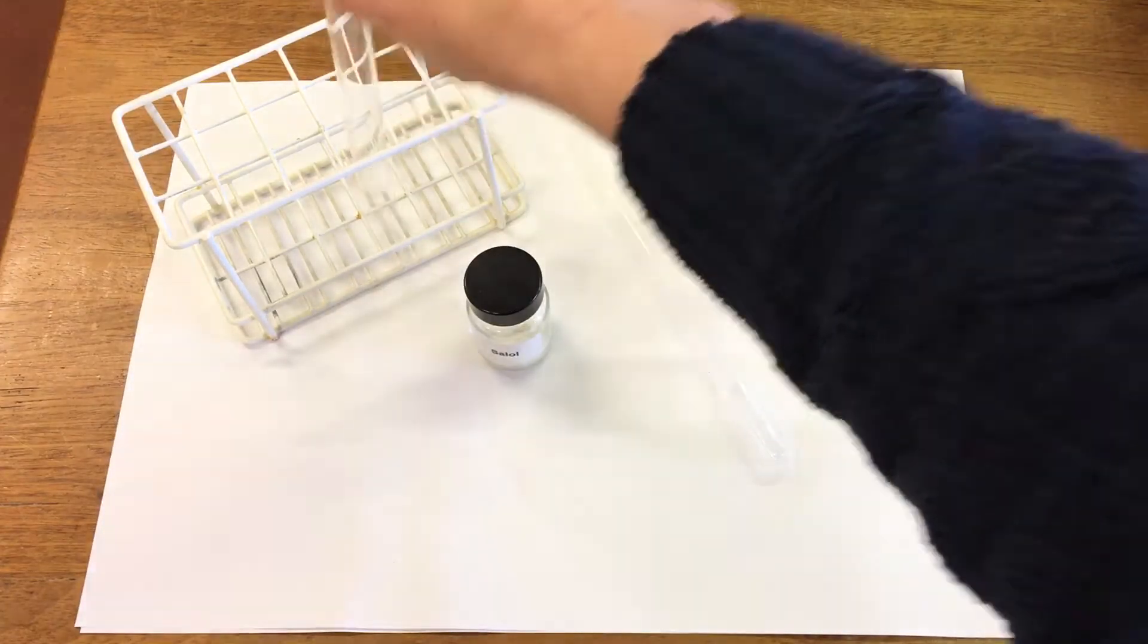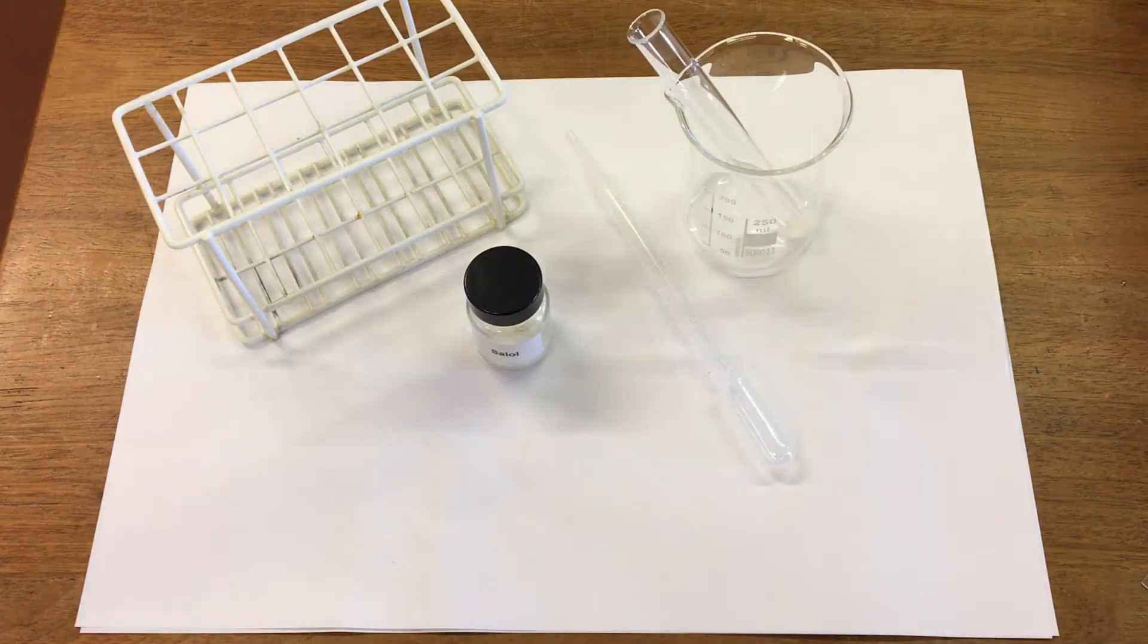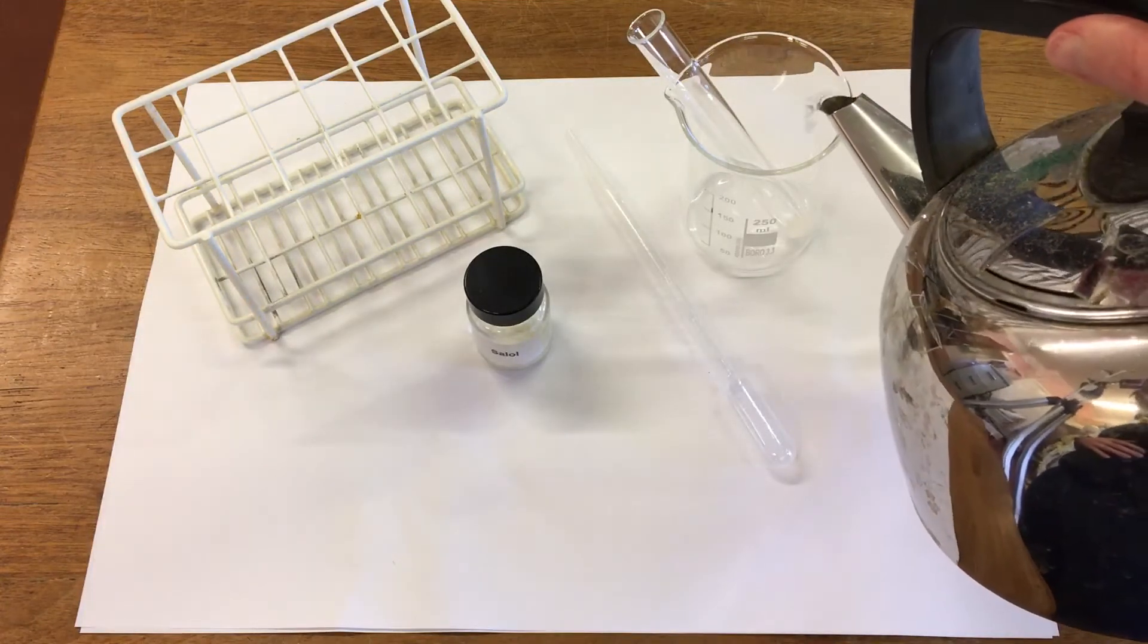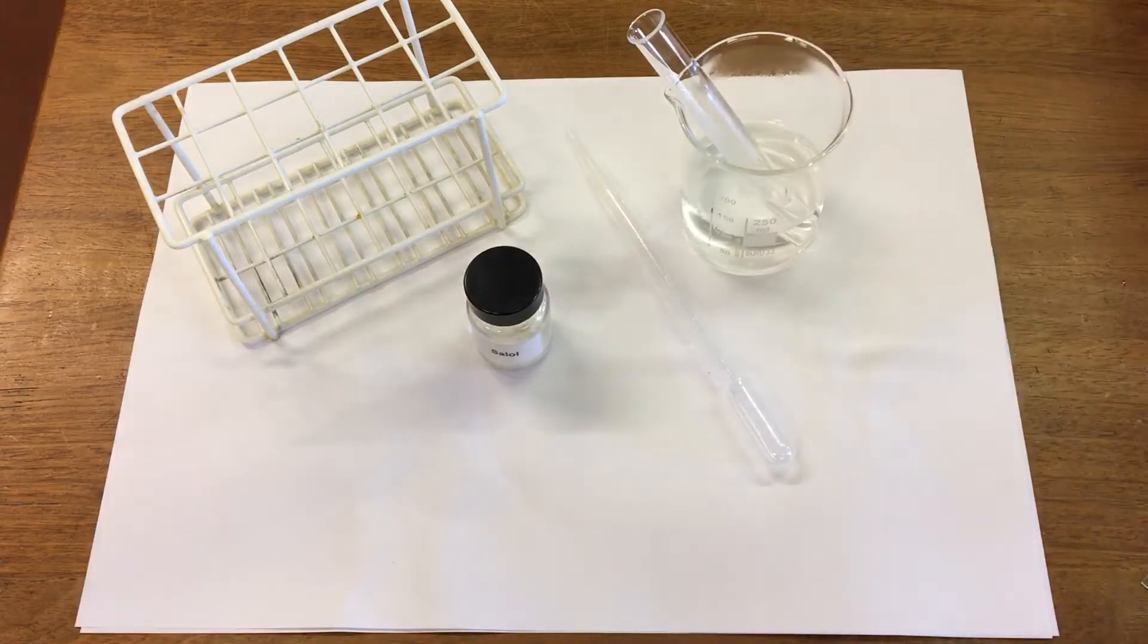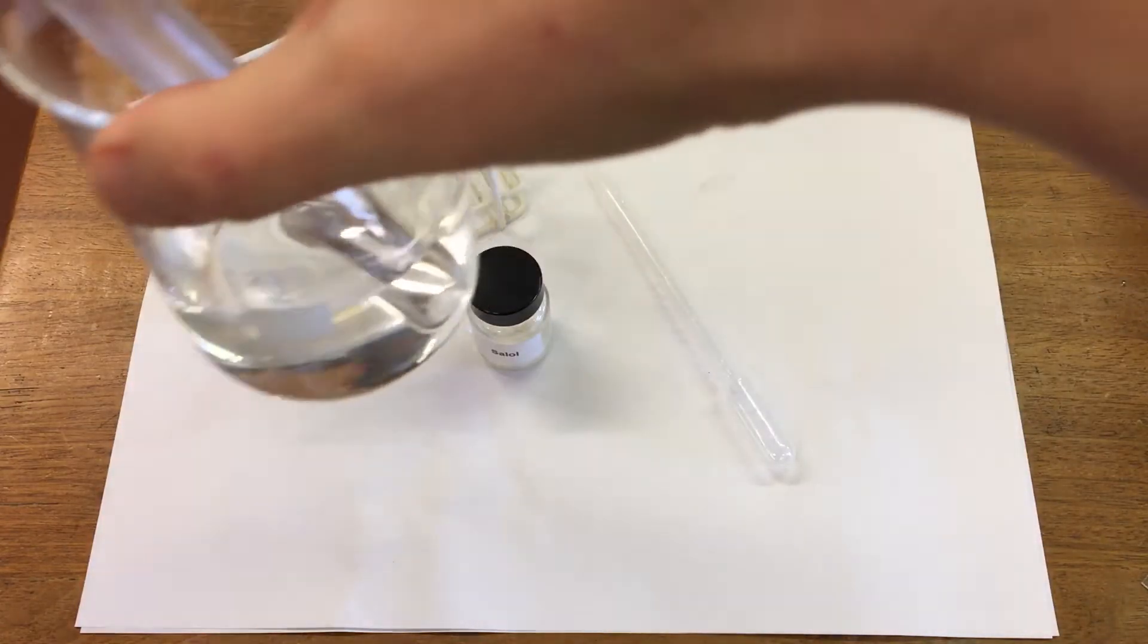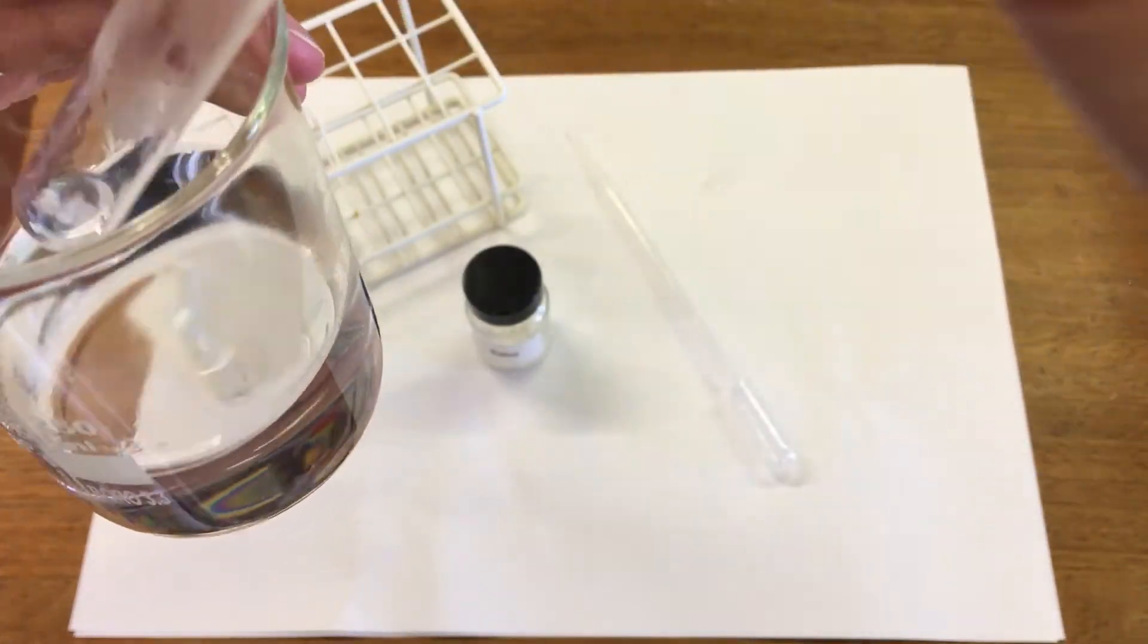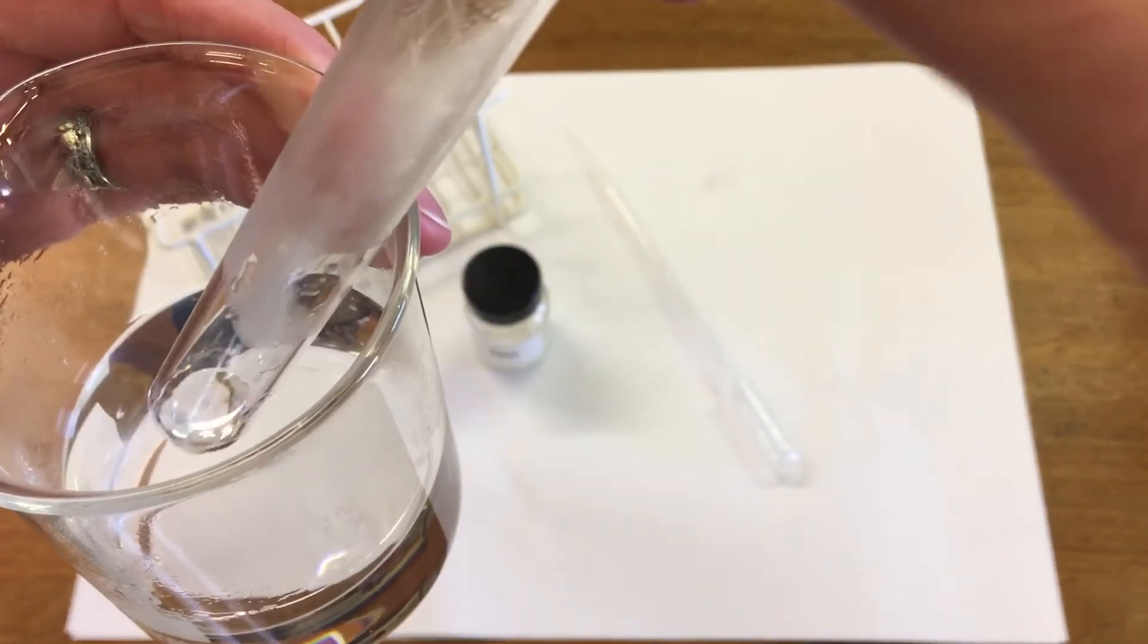So first of all we're going to put it in a beaker and we're going to add some boiling hot water from the kettle, and almost straight away you can see our white solid is starting to change into a liquid.